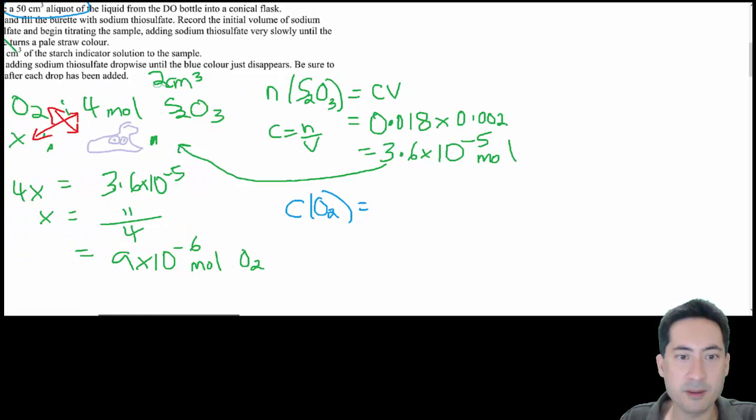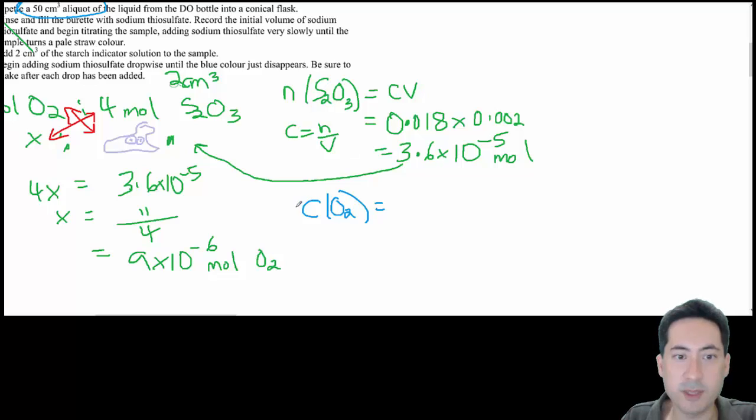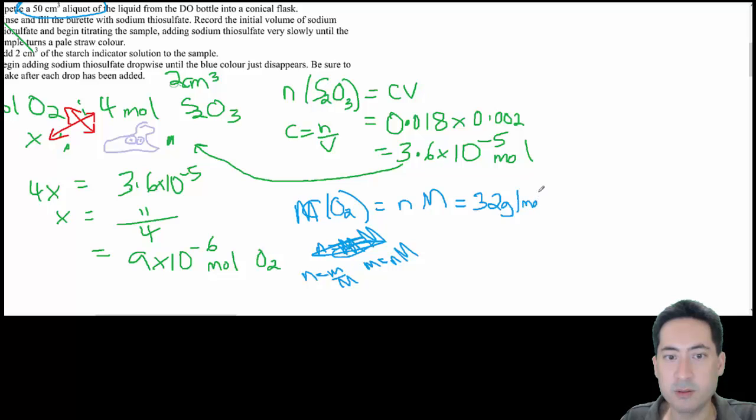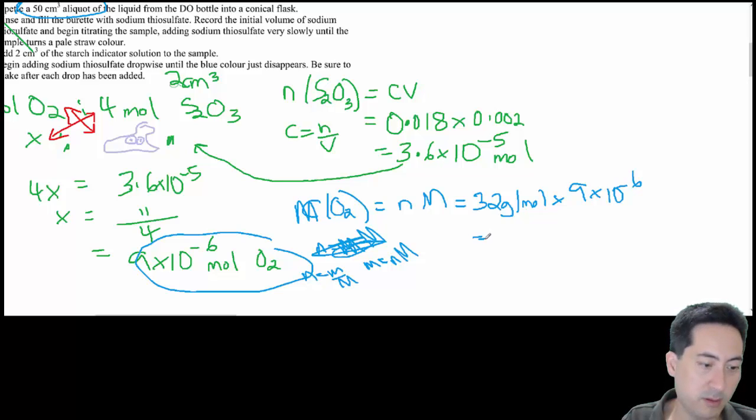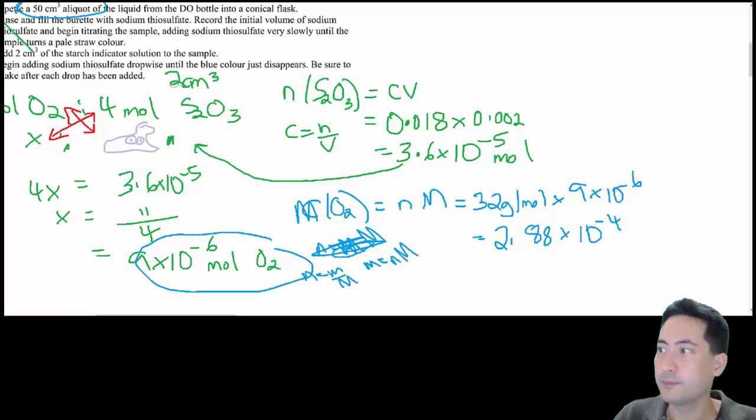So we need to work out the mass of O2. Number of moles equals mass on molar mass, so mass equals n times big M. That's oxygen, so it's 32 grams per mole times number of moles, which is this value here. I'll times that by 32, and I'll get 2.88 by 10 to the minus 4. And that's grams of oxygen.